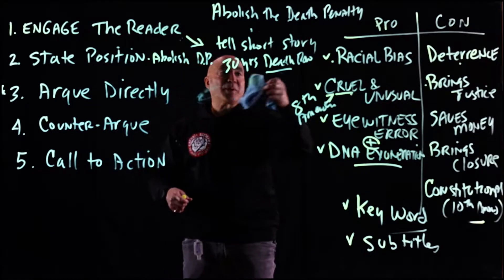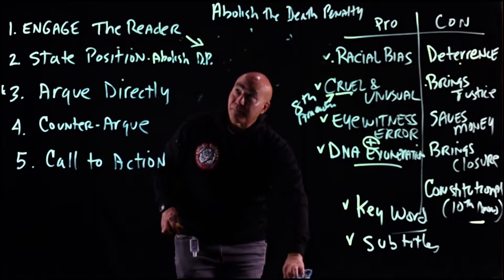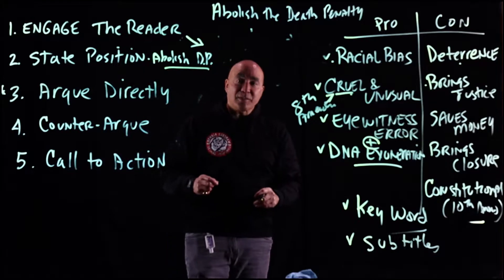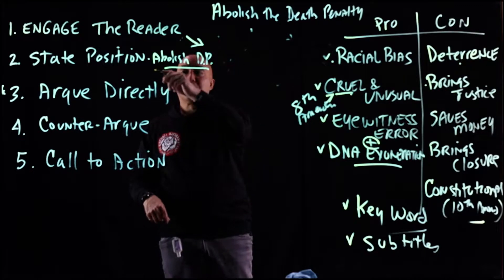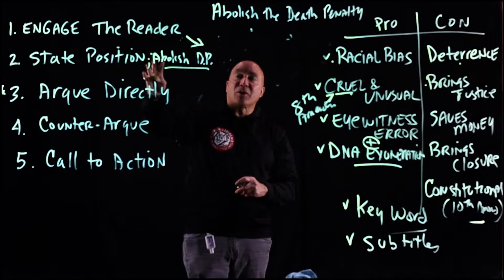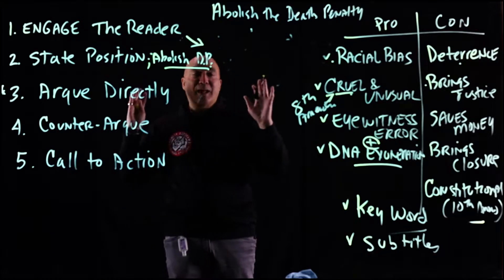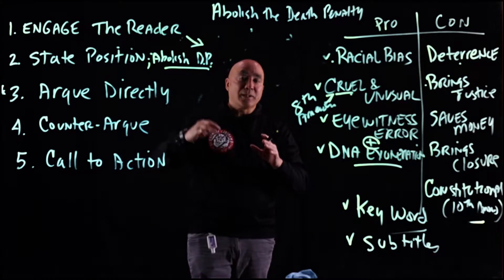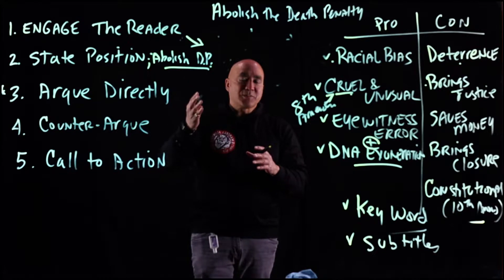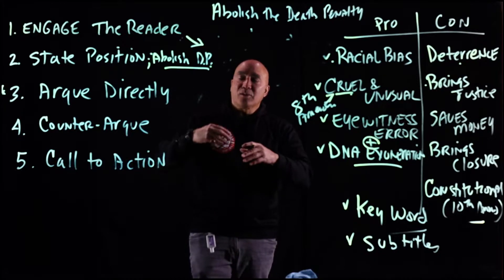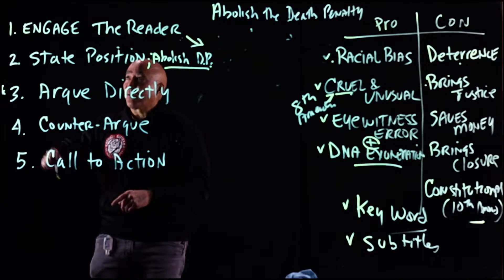Now we move to section two: state the position. Abolish the death penalty — it's just one declarative statement that goes at the end of your opening. It's usually prefaced by a semicolon: you tell the story, you're done, semicolon, then you put 'Abolish the death penalty.' I don't forecast or introduce in the opening. For a PowerPoint maybe you can, but for this paper, to keep the velocity, do not forecast. It slows it down.